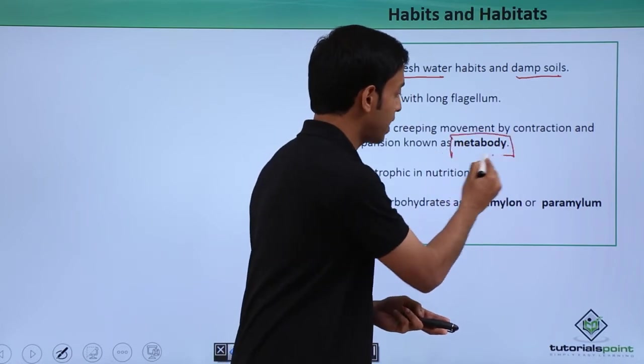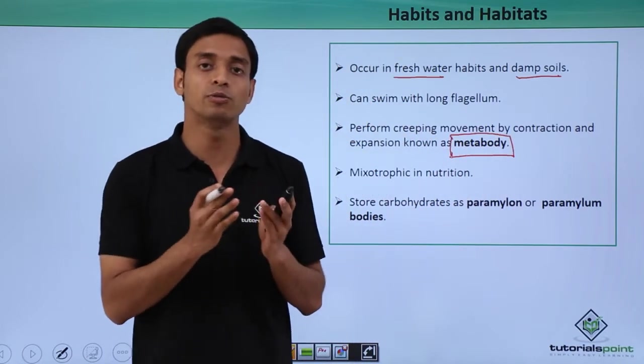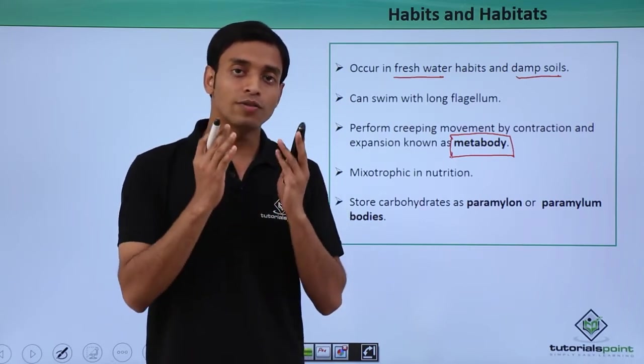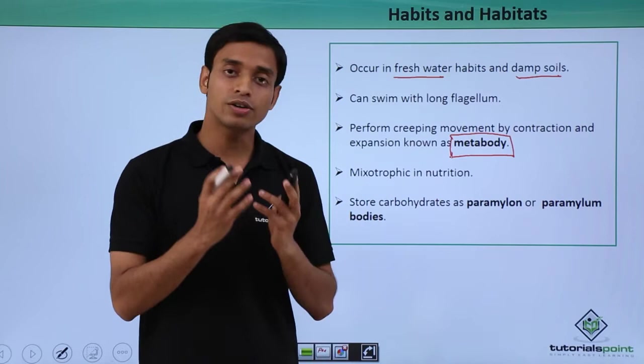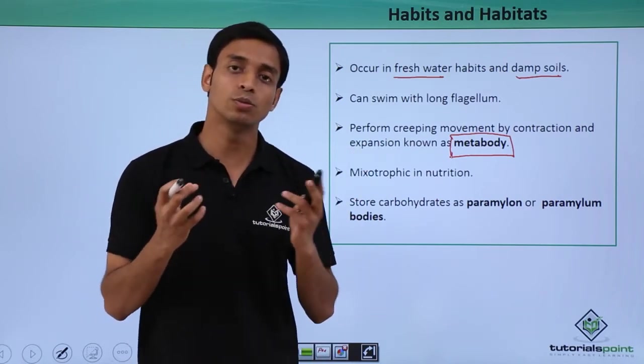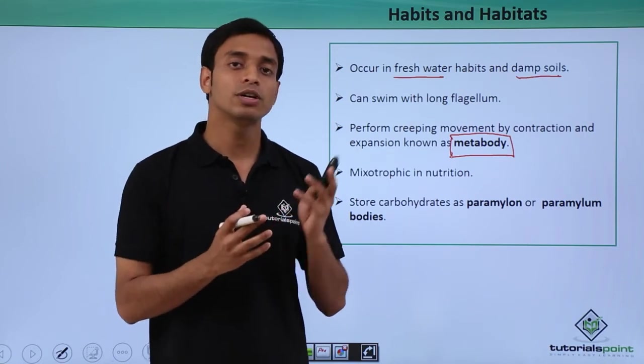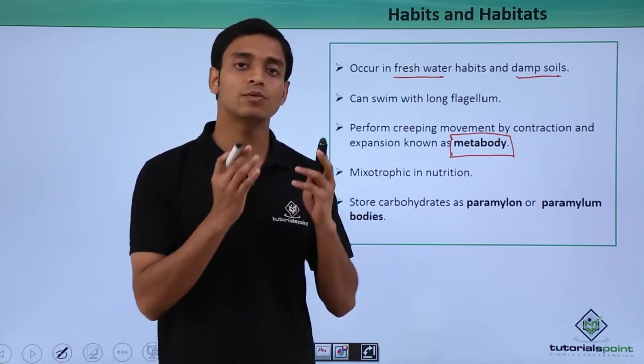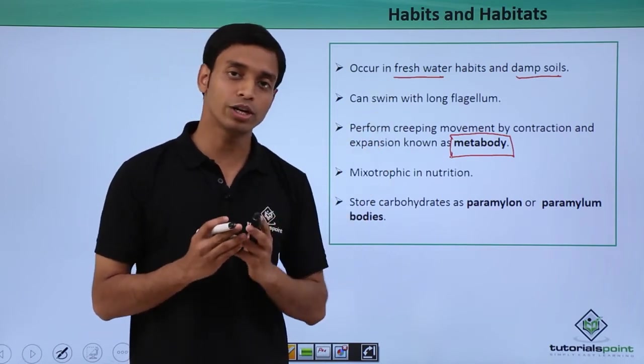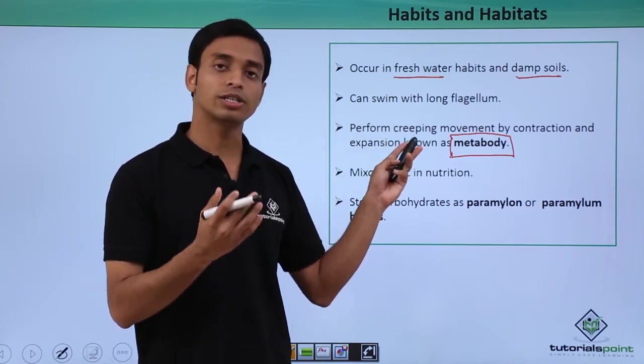What do we mean by contraction and expansion type of movement or creeping movement? We have seen a worm moving, right? So a worm moves by the contraction and relaxation or expansion of its whole body. This is a type of creeping movement, basically a worm-like movement performed by these euglenoids, and this process is known as metabody.